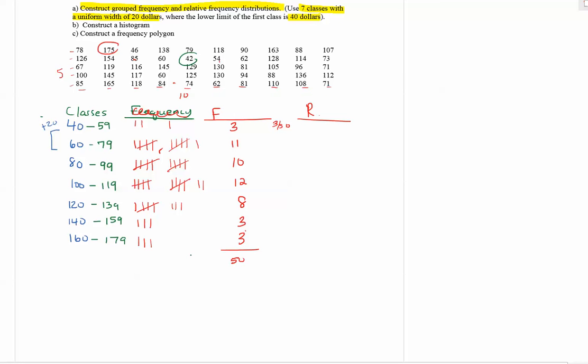So 3 divided by 50 is 0.06, so this is going to be 6%. 11 divided by 50 is 0.22 or 22%. 10 divided by 50 is equal to 0.2, so that would be 20%. 12 divided by 50 is equal to 0.24, 24%. 8 divided by 50 is 0.16 or 16%, and 3 divided by 50 is 0.06 or 6%. This should total up to 100%. So we have the regular frequency distribution just list the totals in each class, and then the relative frequency converts each of those to a percent comparing it to the total.